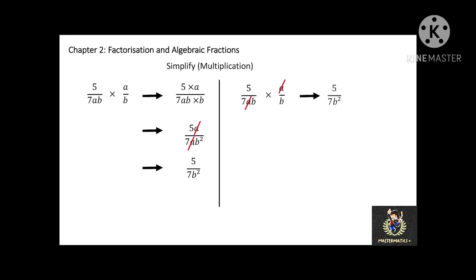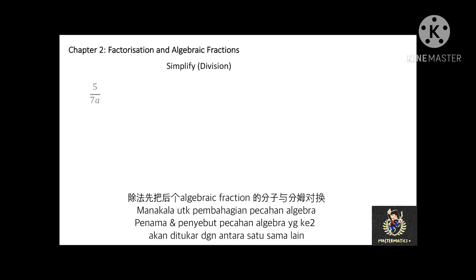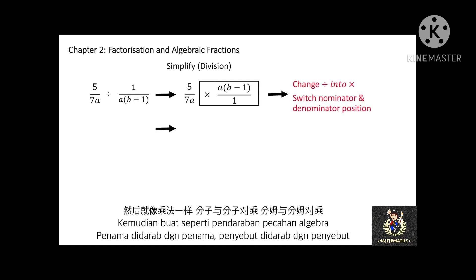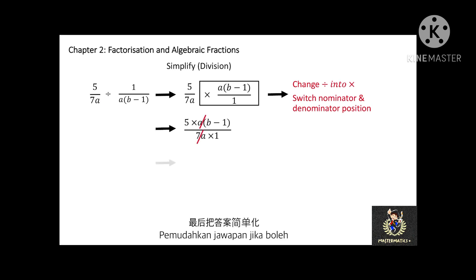For division of algebraic fractions, first switch the numerator and denominator of the second fraction. For example, 5 over 7a divided by 1 over a(b minus 1): the second fraction's numerator 1 moves to the denominator position, and the denominator a(b minus 1) moves to the numerator position. Then perform the multiplication like the previous example.